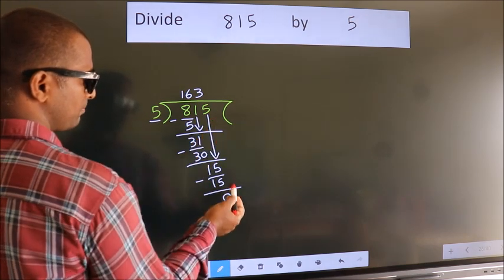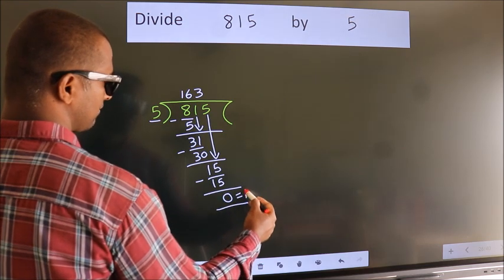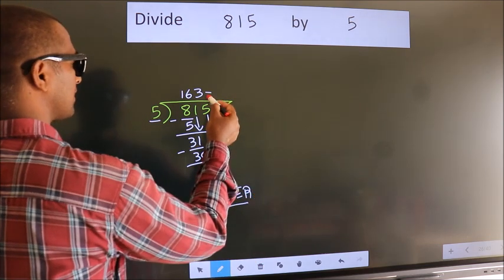No more numbers to bring it down. So we stop here. This is our remainder. This is our quotient.